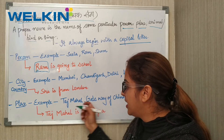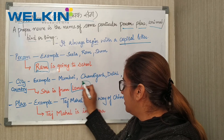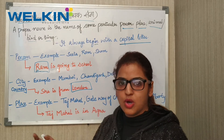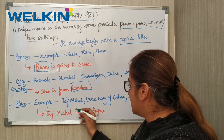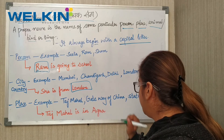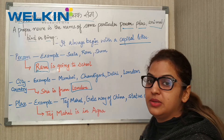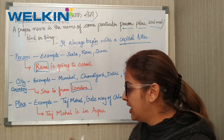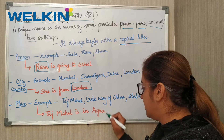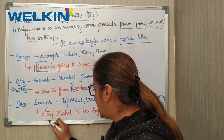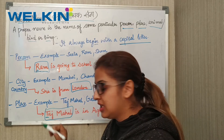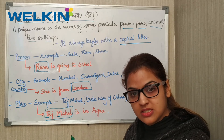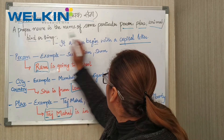She is from London, which is a particular place. Next, we look at specific places — not just cities or countries, but also landmarks: Taj Mahal, Gateway of China, Statue of Liberty. For example, Taj Mahal is in Agra. Because it refers to a particular place, Taj Mahal is a proper noun.